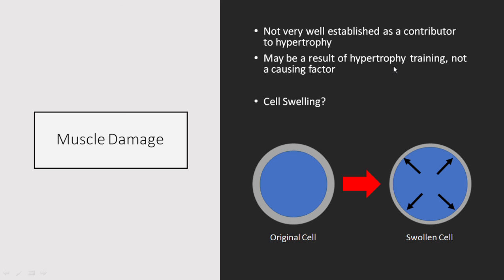One mechanism related to muscle damage that does have some evidence is cell swelling. When we get muscle damage, there's an accumulation of fluid from inflammation, causing the cell to swell. The theory is that this pushes on the cytoskeleton, and as it expands, the cell exterior perceives it as a threat and grows subsequently from that swollen cell expanding.